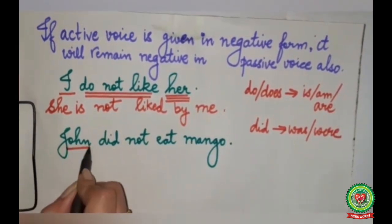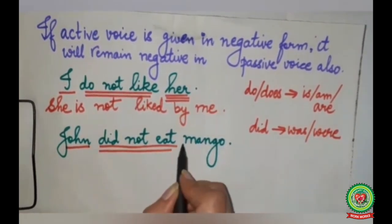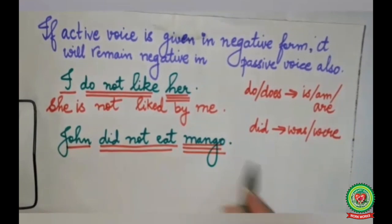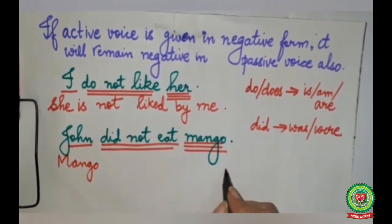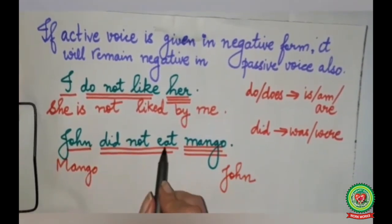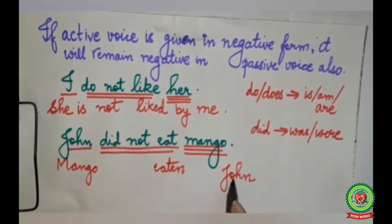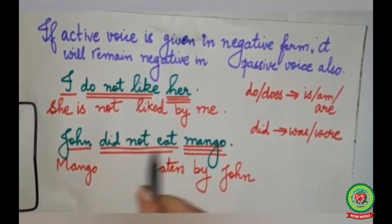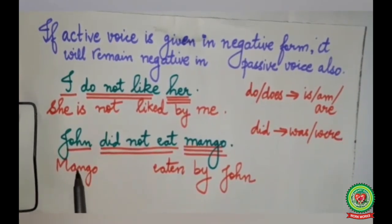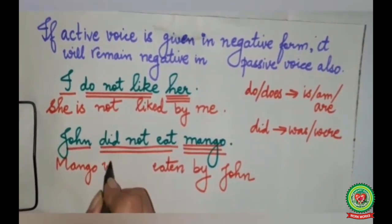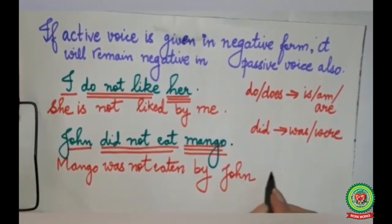Second sentence: John did not eat mango. John is the subject, did not eat is the verb, mango is the object. Mango will come in the beginning, John will go to the last. Eat will change into its past participle form eaten. Before John we add by. Did is past form of verb, so we use was or were. With mango we use was. The sentence becomes: Mango was not eaten by John.